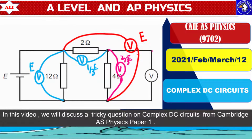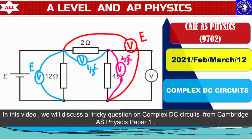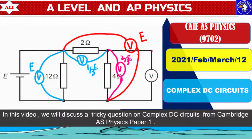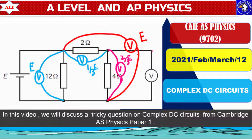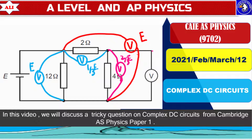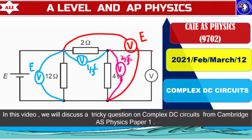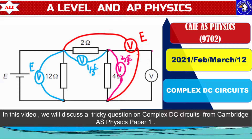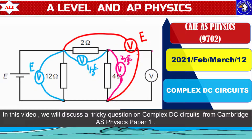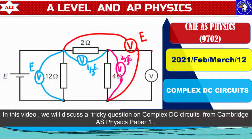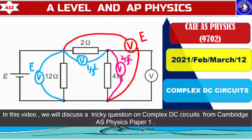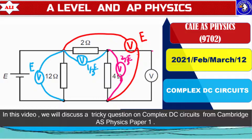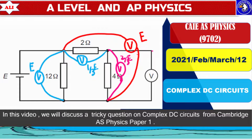Welcome to A-Level and AP Physics, a place where you can improve your understanding of physics with confidence. In today's class we will discuss a complex DC circuit problem from Cambridge AS Physics, and this question is from March 2021. We will solve this question using different approaches, and that will help you to improve your understanding of DC circuits.